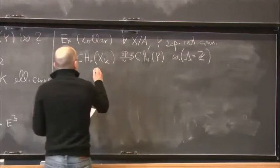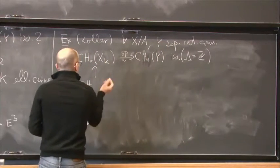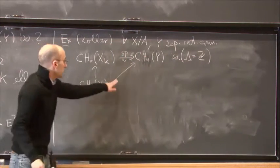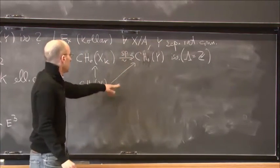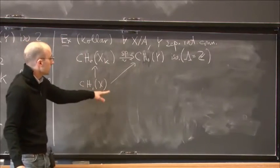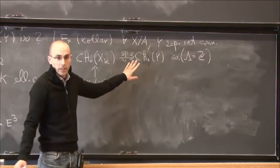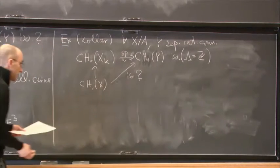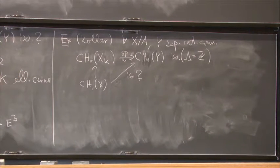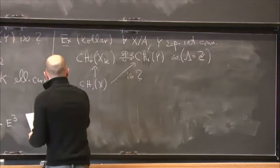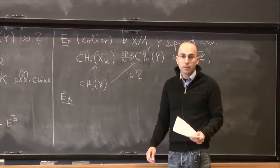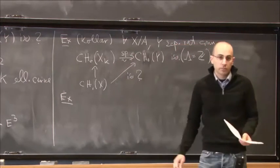Now we have the map from the Chow group of one-cycles on the smooth model X, and here we have just the restriction map. So maybe this suggests that in this situation also this map is an isomorphism, but I cannot answer this question in this case. This is perhaps an interesting case where the question has a positive answer.